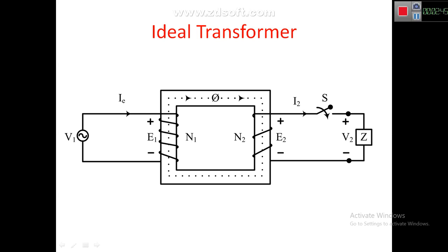The main observation is that the primary voltage V1 and the induced EMF E1 are equal but opposite in nature according to Lenz's law, so V1 equals minus E1. Similarly, E2 and V2 are also equal as there is no drop between them. One more assumption we have made is that N1 and N2 are equal values.